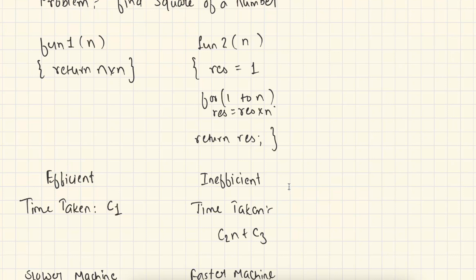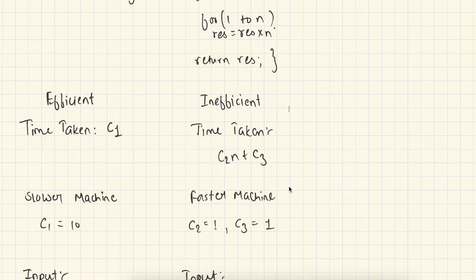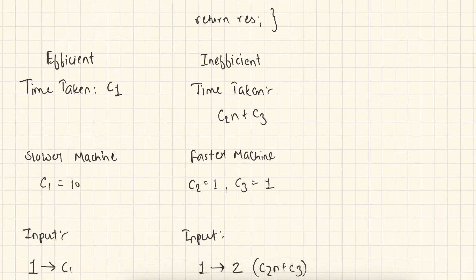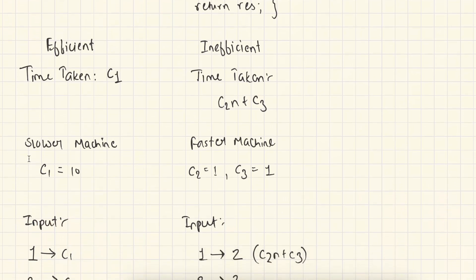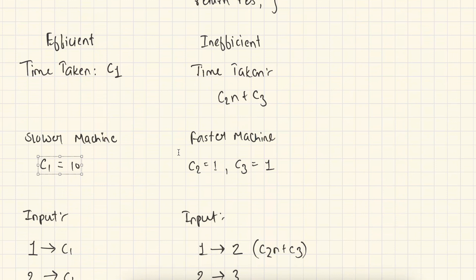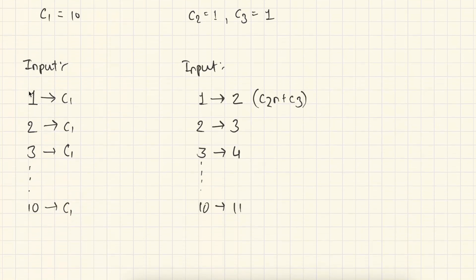Previously, comparing functions was not possible because of many external factors like machine and programming language. So now we are going to execute function one on a slower machine, where the value of c1 would be 10, since it takes 10 units of time to execute. And we are going to execute function two on a faster machine, where I assume the values of c2 and c3 would be 1, because it is a faster machine and takes very less time to execute. Now we are going to pass different inputs to our functions.